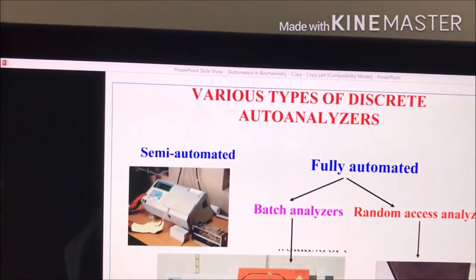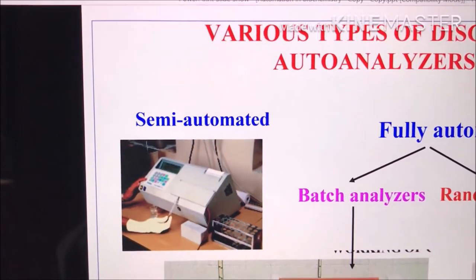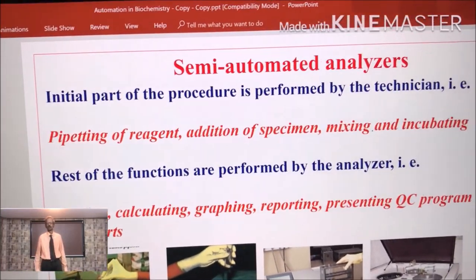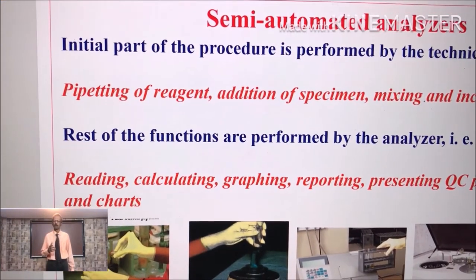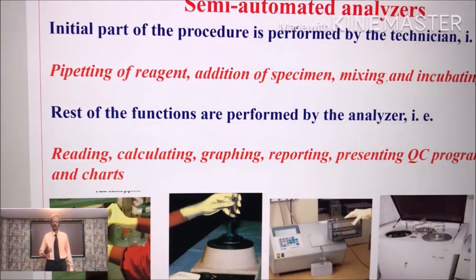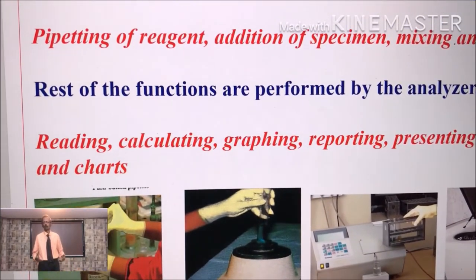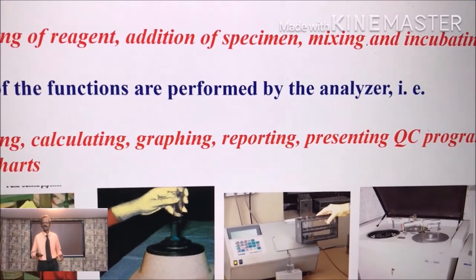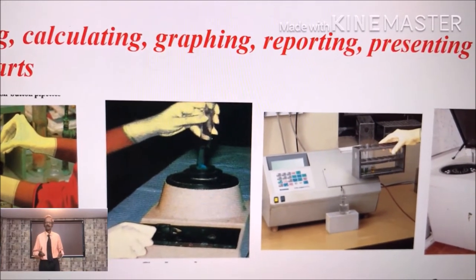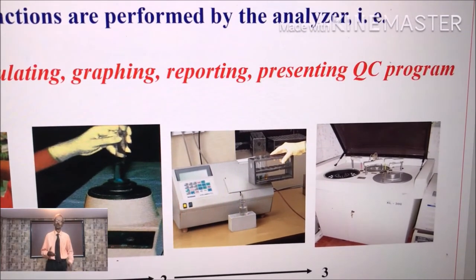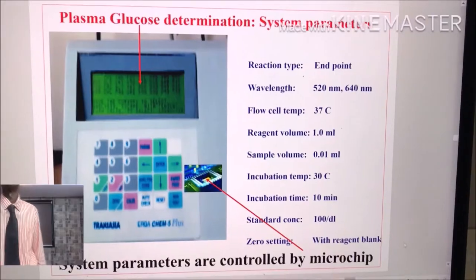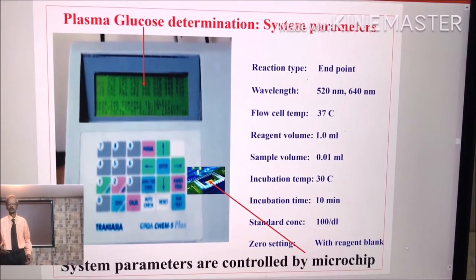And today we are going to discuss about how to use and operate semi-automated analyzers. In the case of semi-automated instruments, initial part of the procedure is performed by the technician. That means pipetting of the reagent, addition of specimen, mixing, incubating and rest of the work. That means reading, calculating, graphing, reporting and presenting quality control charts are performed by the analyzer.